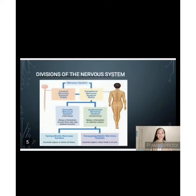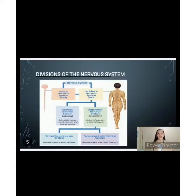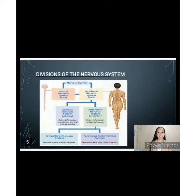The peripheral nervous system consists of many nerves that branch out from your CNS all over your body. This system relays information from your brain and spinal cord to your organs, arms, legs, fingers, and toes. Your peripheral nervous system contains your somatic nervous system, which guides your voluntary movements, and the autonomic nervous system, which controls the activities you do without thinking about them. Under the autonomic nervous system is the sympathetic nervous system, which controls organs in times of stress, and the parasympathetic nervous system, which controls organs when the body is at rest.